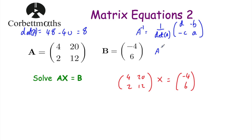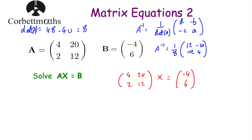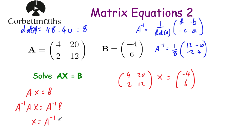Now we multiply both sides by the inverse of A. The left-hand side becomes the identity matrix times X, which is just X. On the right-hand side, the inverse of A goes in front: one-eighth times 12, negative 20, negative 2, 4, multiplied by negative 4, 6. Multiplying the matrices first: first row times column gives 12 times negative 4 plus negative 20 times 6, which is negative 48 plus negative 120. Second row times column gives negative 2 times negative 4 plus 4 times 6, which is 8 plus 24.